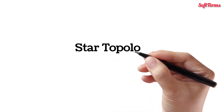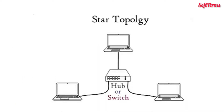In star topology, computers connect to a central device — a switch or a hub — with point-to-point communication links. Point-to-point connection means that there is a dedicated link or cable between two devices, and other devices cannot use it.